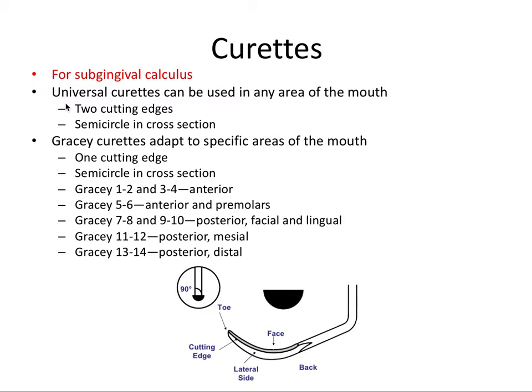Universal curettes can be used in any area of the mouth. Looking at the zoomed-in working end, it has the same face and two lateral sides as the sickle scaler, but the tip is rounded. The cross section is no longer triangular but semicircular, because the whole bottom of the instrument is also rounded off, while the face remains straight across on top of the cross section.